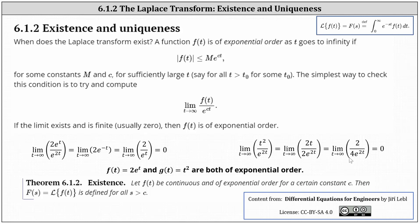Now let's look at the theorem on existence. Let f of t be continuous and of exponential order for a certain constant c. Then big F of s, the Laplace transform of f of t, is defined for all s greater than c. In our case, the Laplace transforms exist for f of t and g of t for s greater than two.